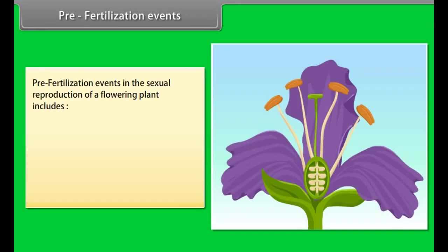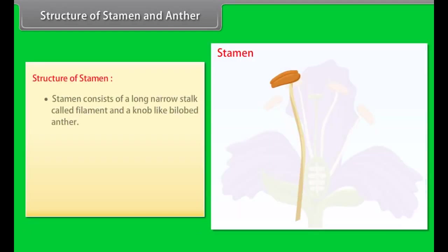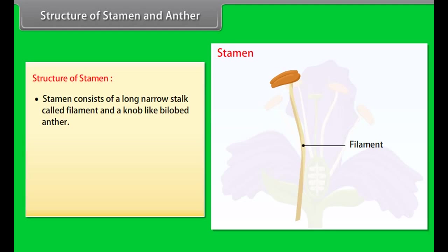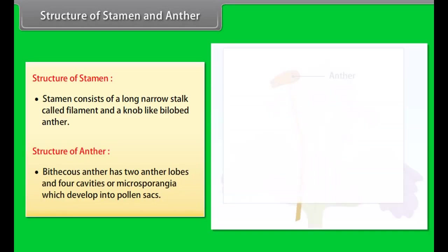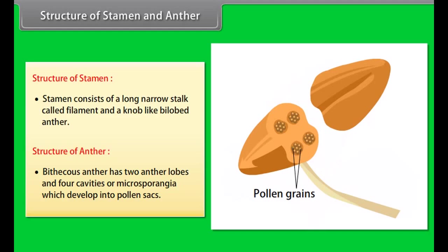Pre-fertilization events in the sexual reproduction of a flowering plant include microsporogenesis and development of pollen grains, and megasporogenesis and development of the female gametophyte. The stamen consists of a long narrow stalk called the filament and a knob-like bilobed anther. A bithecous anther has two anther lobes and four cavities or microsporangia, which develop into pollen sacs.